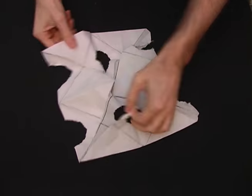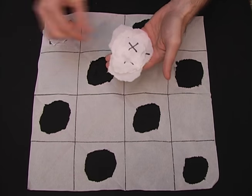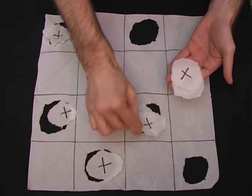Unfold the napkin, and all of the crosses will be missing. And when you unfold the corner, you'll have all of the crosses, and you've won the bet.